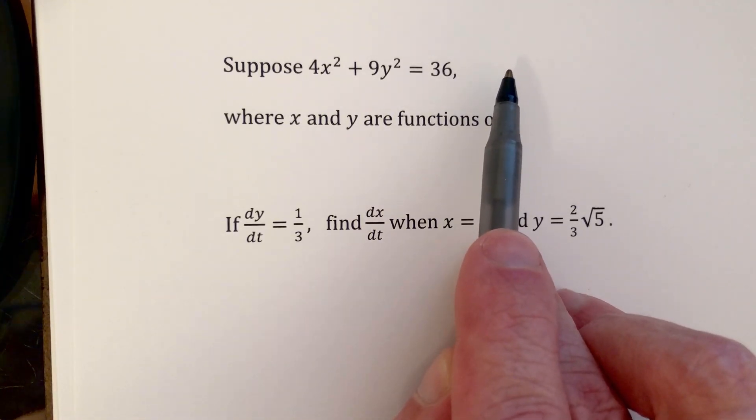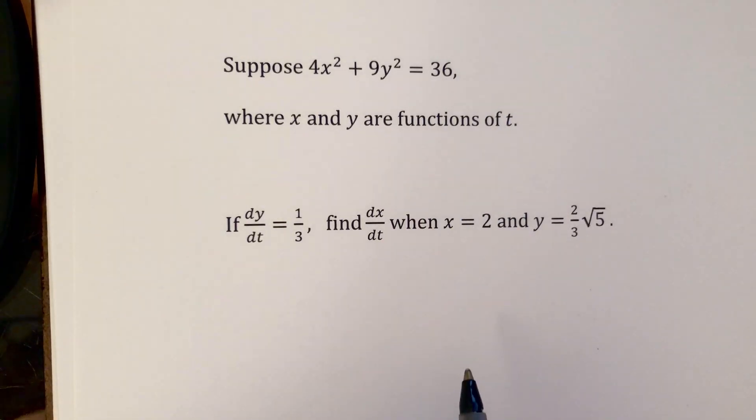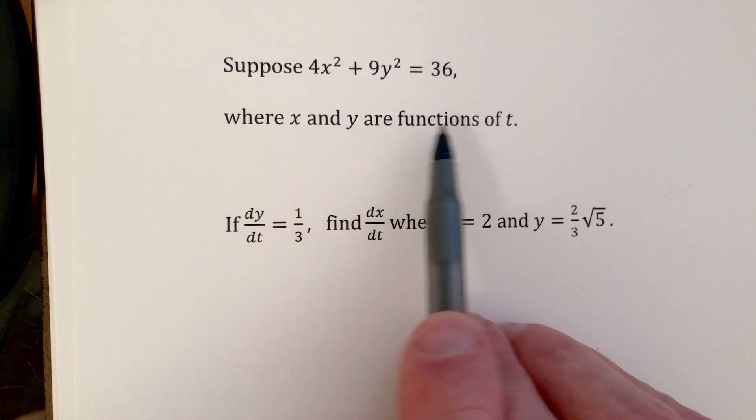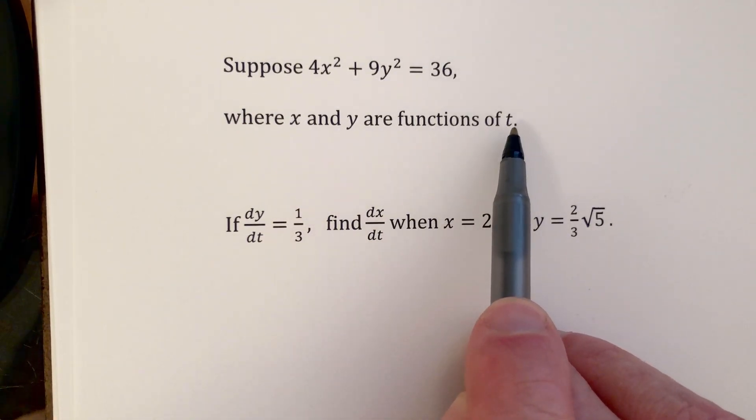So you think of x and y as being the coordinates of any point on this ellipse. And we're told that x and y are functions of t.